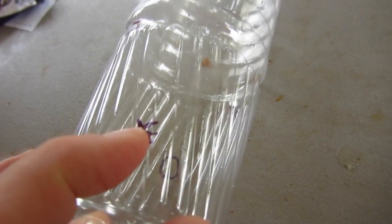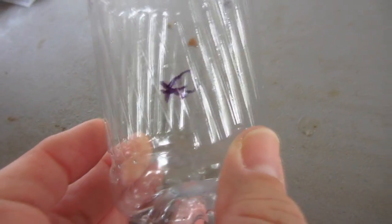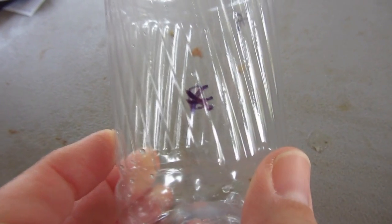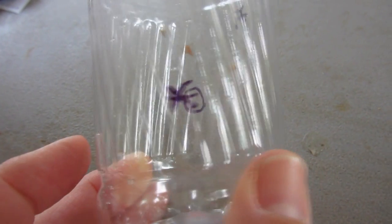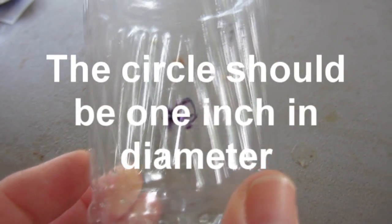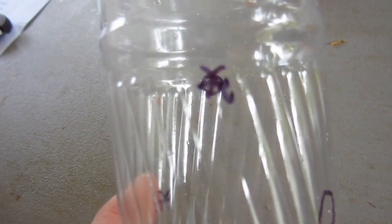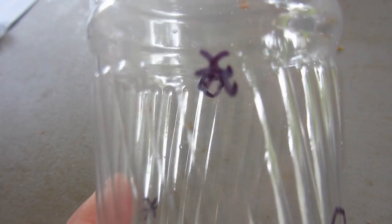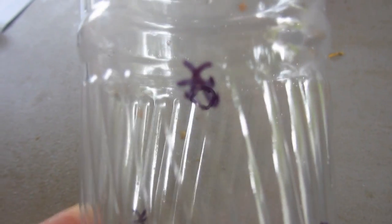Okay, so you see our asterisk two inches above the bottom right there, and directly across from it is our circle. Then we turn the bottle and two inches above that an asterisk, and directly across from that a circle.